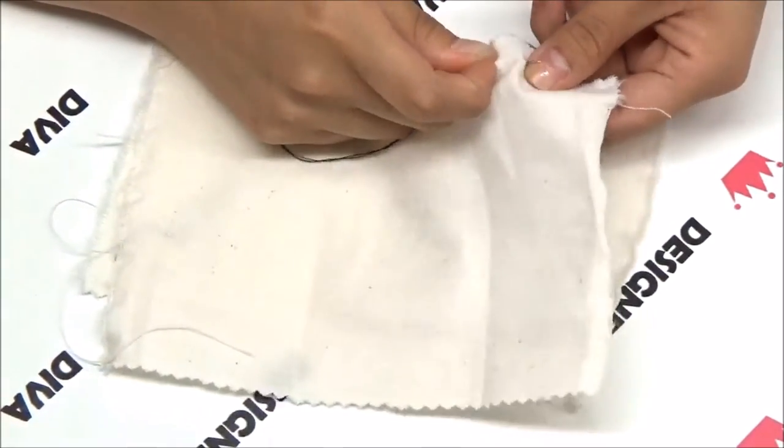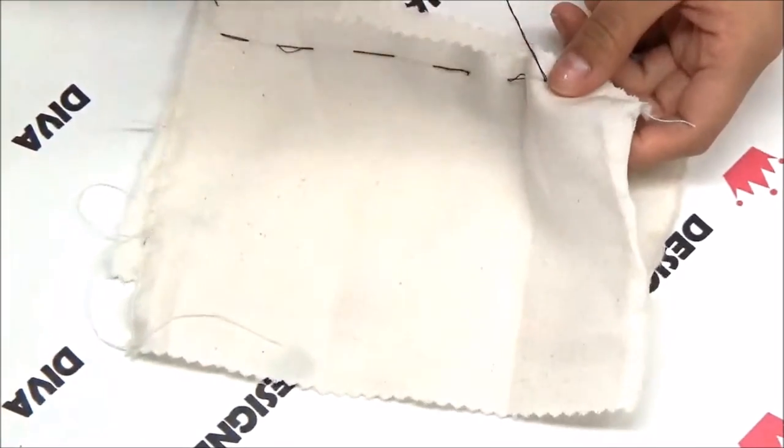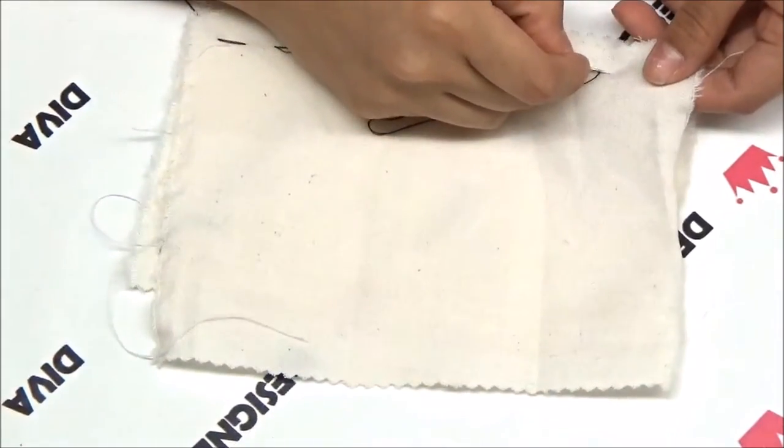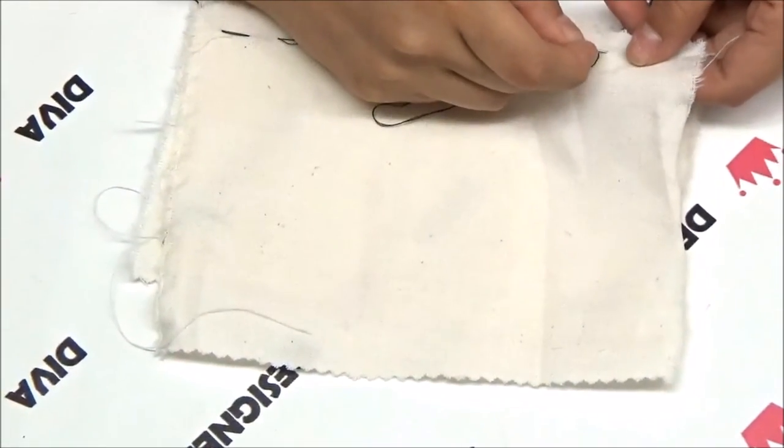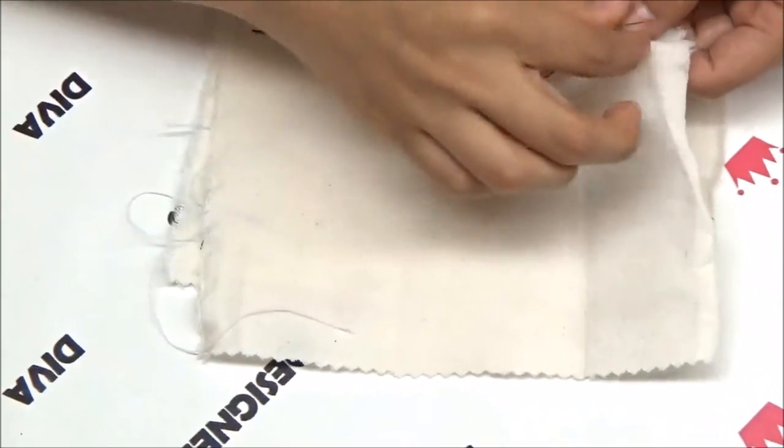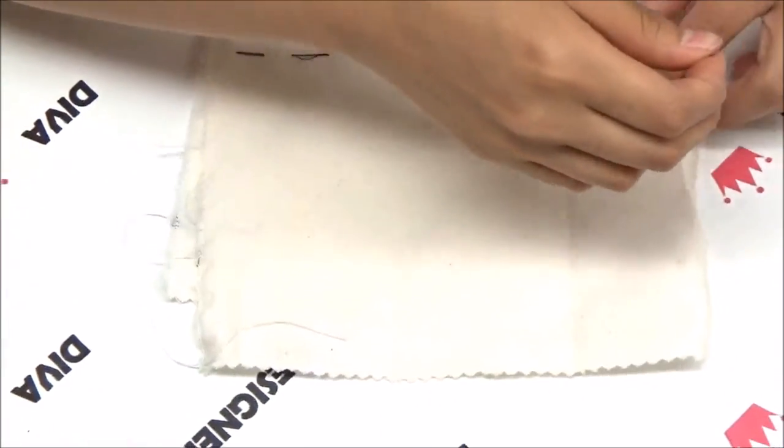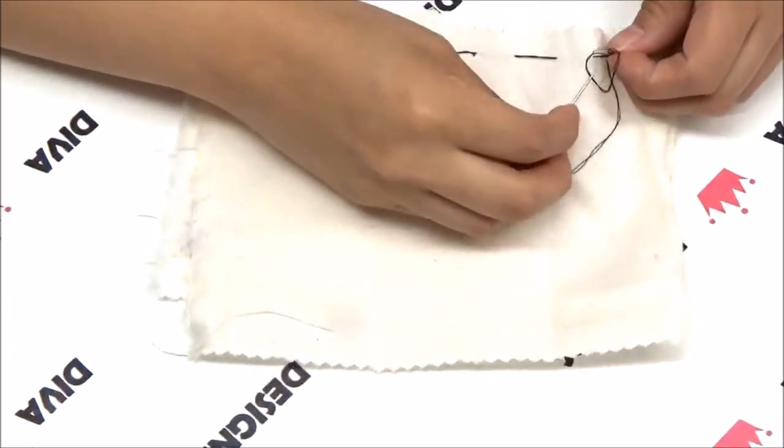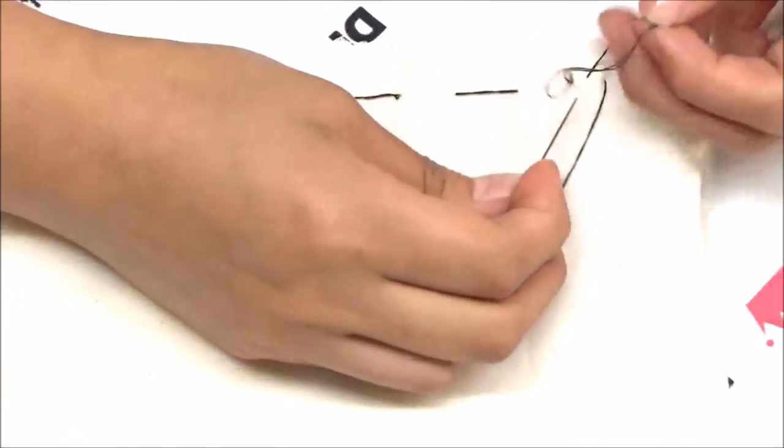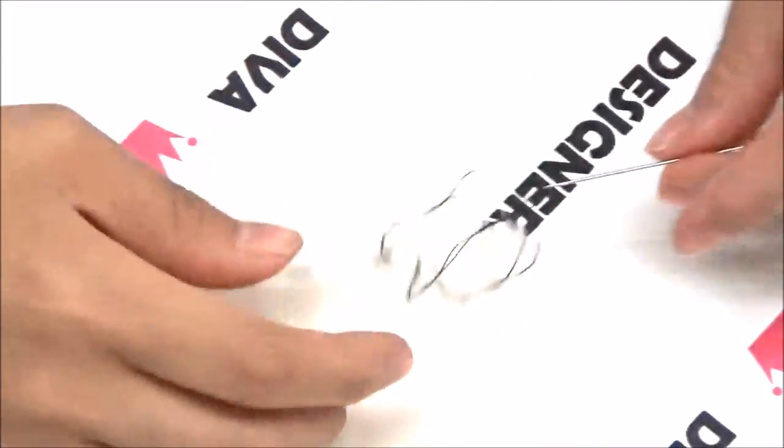To finish off, pass the needle down and poke up again, but this time leave a loop. Pass the needle through the loop and pull tight.